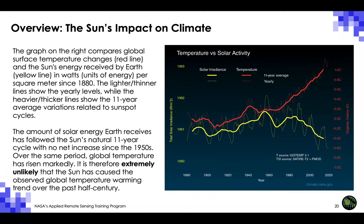The graph on the right compares global surface temperature changes, shown as the red line, and the sun's energy received by Earth, shown as the yellow line, in watts per square meter since 1880. The thicker lines show 11-year averages related to sunspot cycles. The amount of solar energy Earth receives has followed the sun's natural 11-year cycle with no net increase since the 1950s. Over that same period, global temperature has risen markedly. It is therefore extremely unlikely that the sun has caused the observed global temperature warming trend over the past half century.